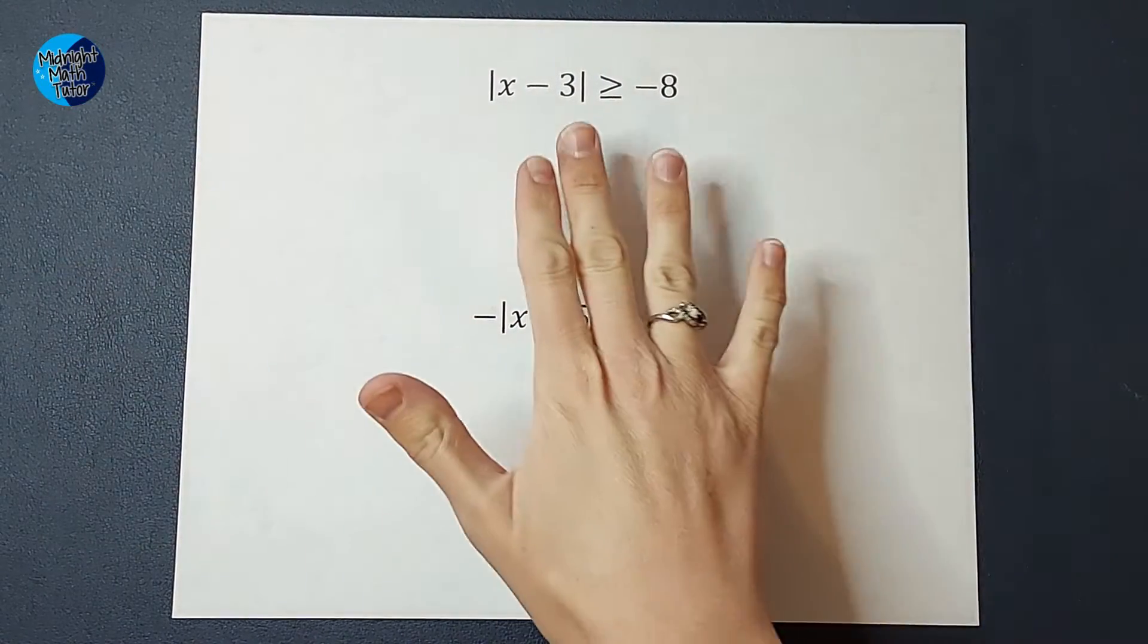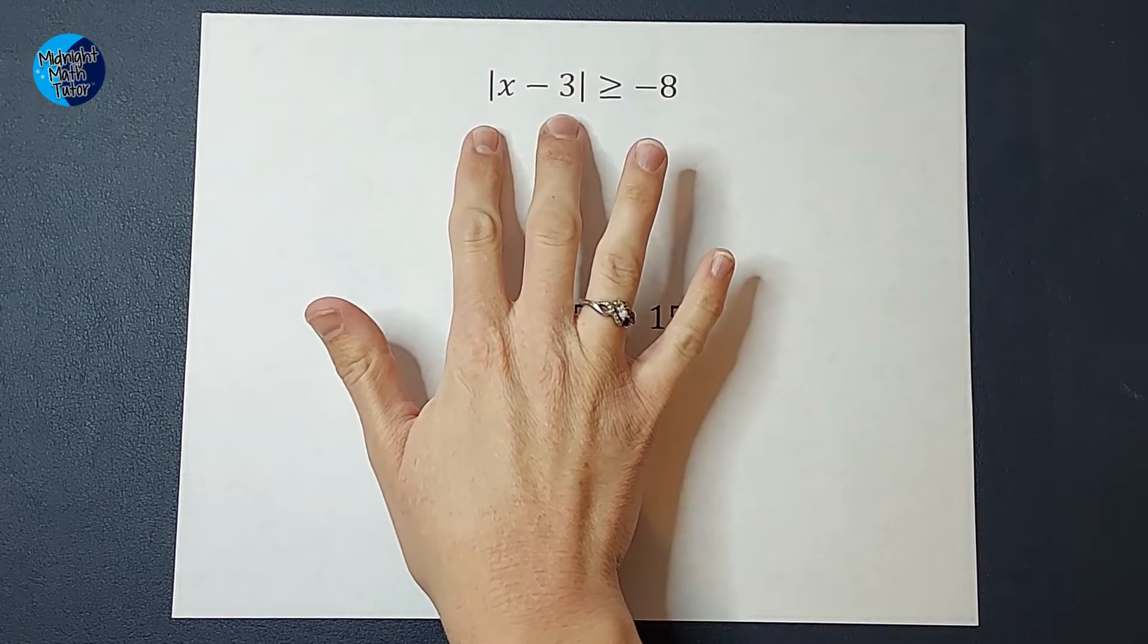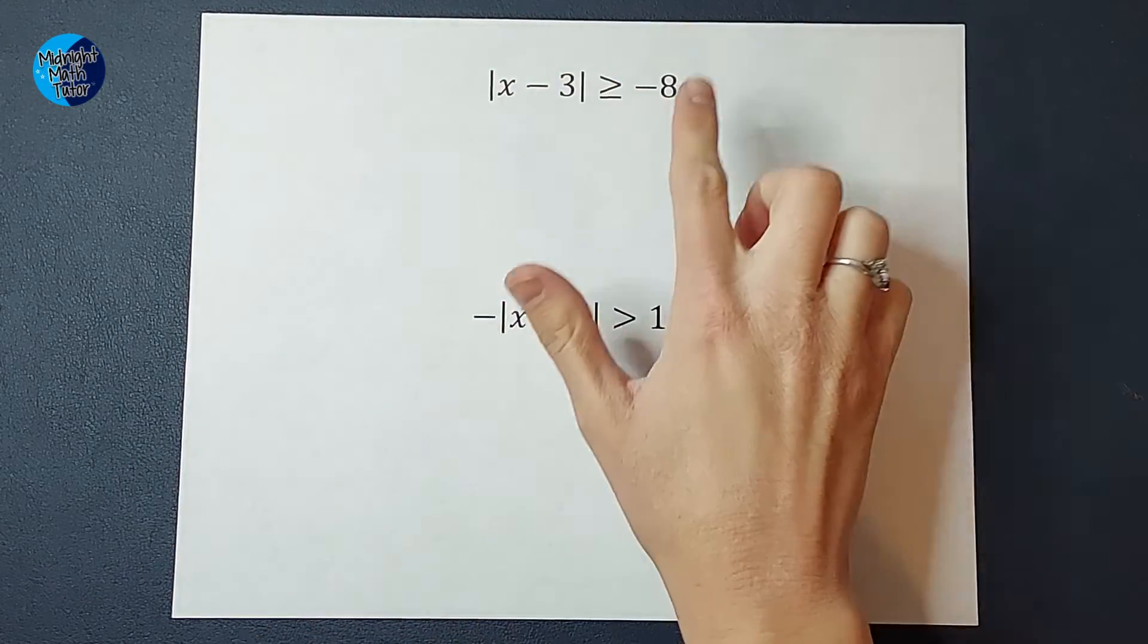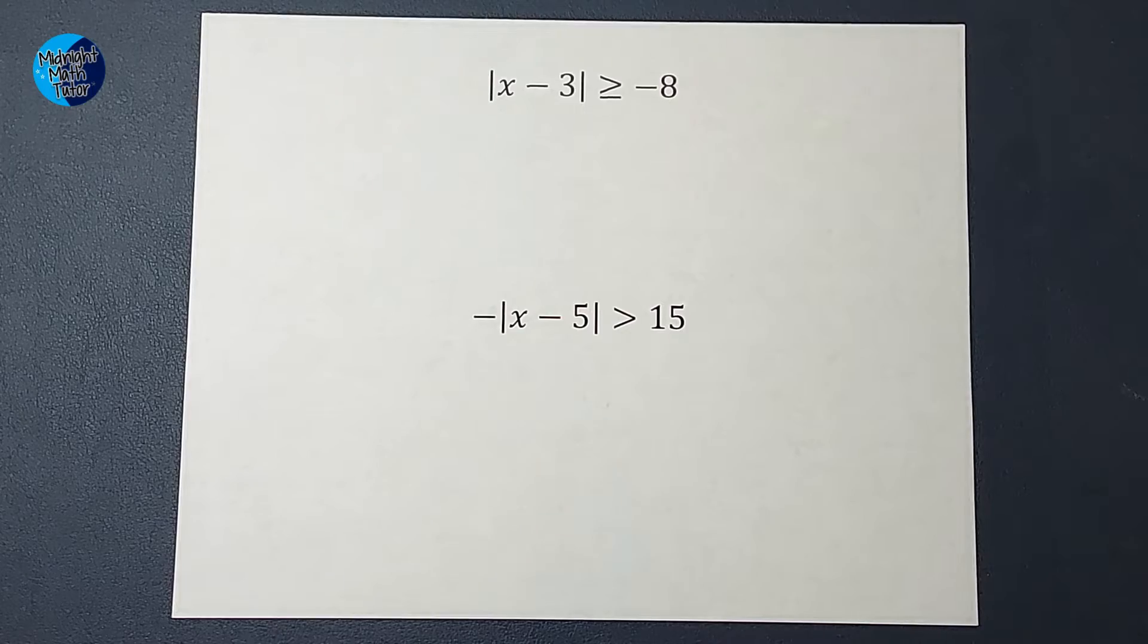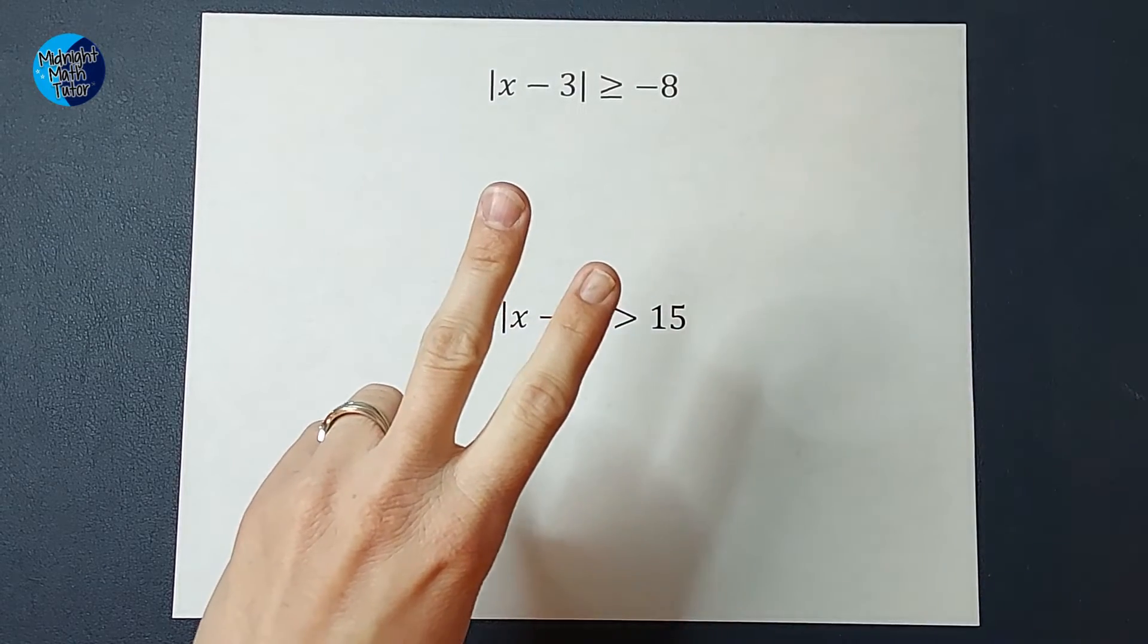So let's go ahead and look at this guy first. When my absolute value bars are alone, I always want to get them alone before I try and solve these. Once they're alone, if this number over here is negative, I automatically know my answer is either going to be all real numbers or no solutions.